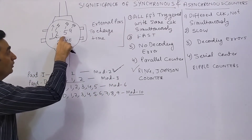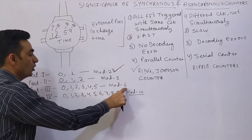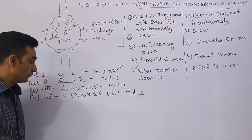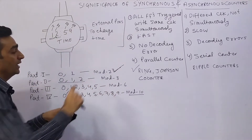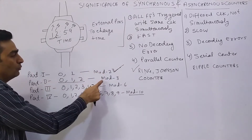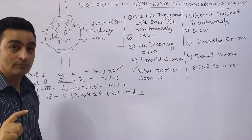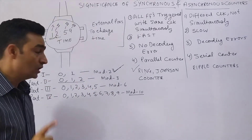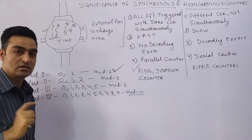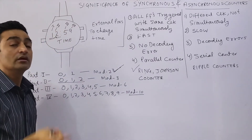The third part requires a mode 6 counter because it has 6 states: 0, 1, 2, 3, 4, 5. The fourth and last number can give output 0 to 9, so it requires a mode 10 counter. So the complete output display can be implemented using a mode 2 counter, mode 3 counter, mode 6 counter, and mode 10 counter — all implemented using synchronous counter logic. Now, where is the asynchronous logic? The asynchronous logic is in the external pins, which are provided to change or reset the date and time of the digital watch.